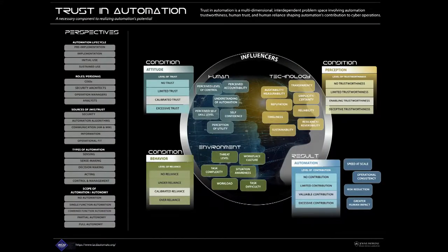There are also different types of automation already enumerated in IACD: sensing, sense-making, decision-making, acting, control, and management. And there's the scope of automation autonomy — from no automation, to single-function automation, combined function, partial autonomy, and full autonomy. On the right side of the framework is our model of all the different influences and conditions that result in whether you're using the automation that you've invested in or not. IACD anticipates that using automation will be helpful.